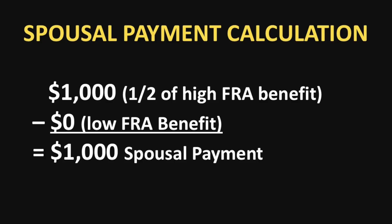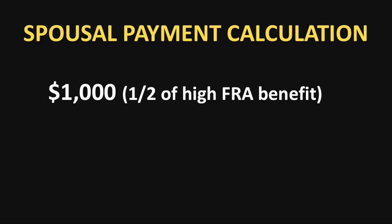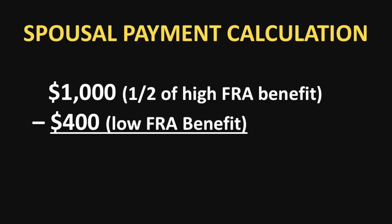Now that scenario happens, but what's more common are the dual entitlement cases where both spouses have their own benefit, but one is much higher than the other. So let's assume that the higher earning spouse has a primary insurance amount of $2,000. Half of that is $1,000. Then let's assume the low earner has a primary insurance amount of $400. This tells us that the spousal payment is $600.